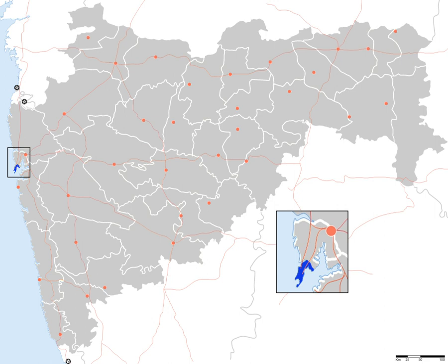Thereafter, Mumbai's rulers changed through history until Islamic rulers conquered what is now Maharashtra and conquered some of the islands in 1534. Subsequently, the Sultan of Gujarat took over all the islands, which were then conquered by the Portuguese.